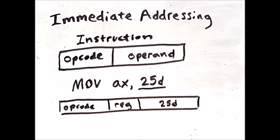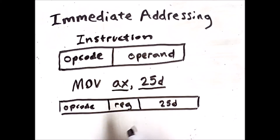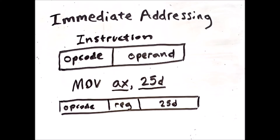Let me emphasize that the register portion — AX — is not using immediate addressing. It is using register addressing, which we'll discuss more momentarily.